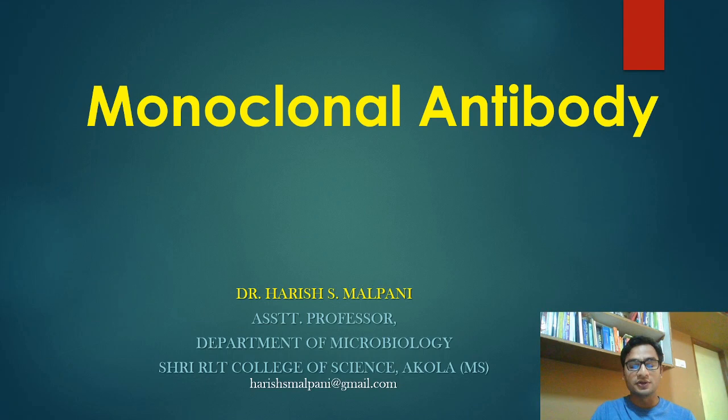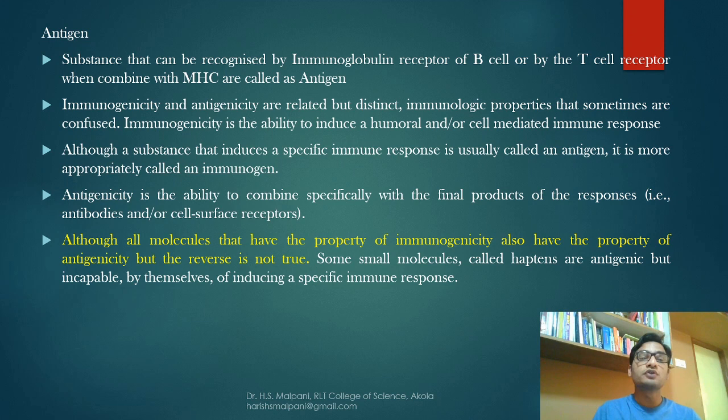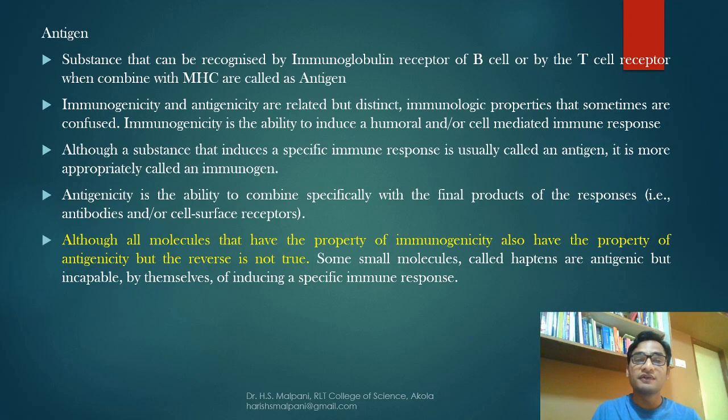What we are going to discuss today is first antigen, then epitope, the concept of monoclonal antibody, its production and application. The specific definition of antigen is a substance that can be recognized by the immunoglobulin receptor of B cells or T cell receptors when combined with MHC, and such substances are called antigens.